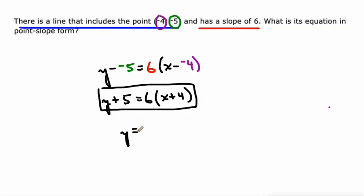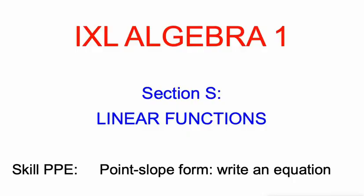Should be noted that a lot of textbooks might consider this to be point-slope form where you subtract 5 from both sides, and that is an equivalent equation. That's how you'd enter it into a graphing calculator, but this is what IXL is looking for. Alright, good luck writing equations in point-slope form.